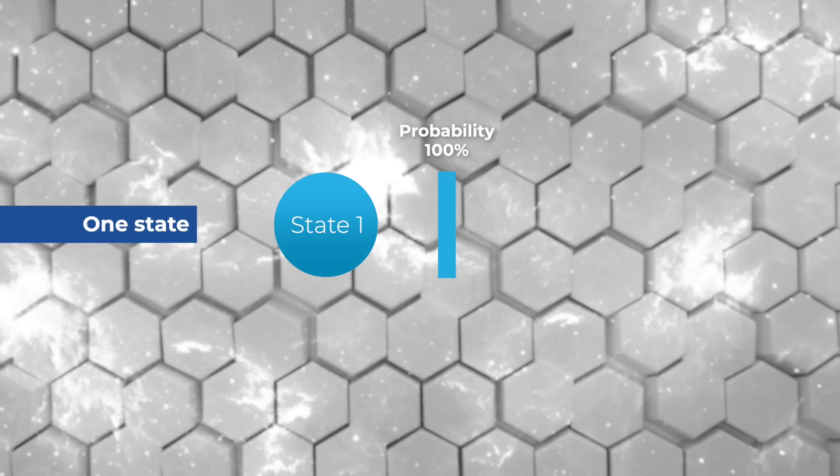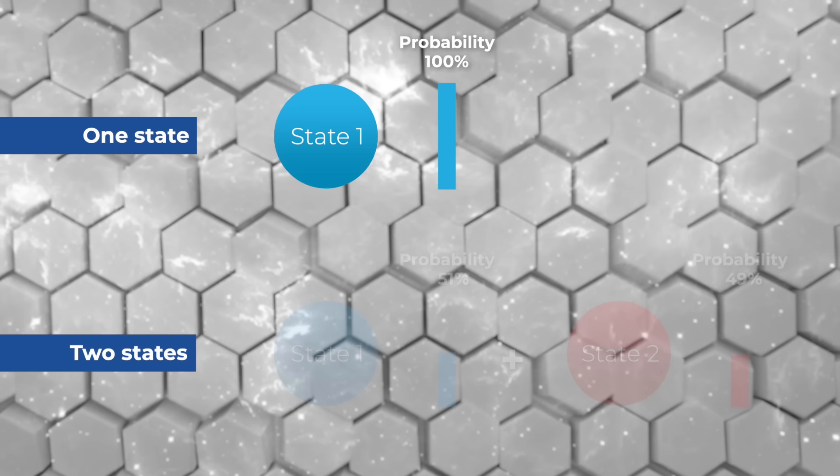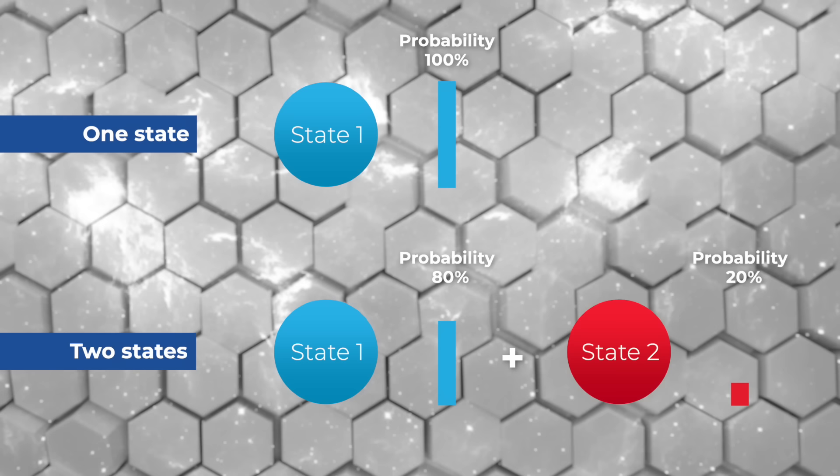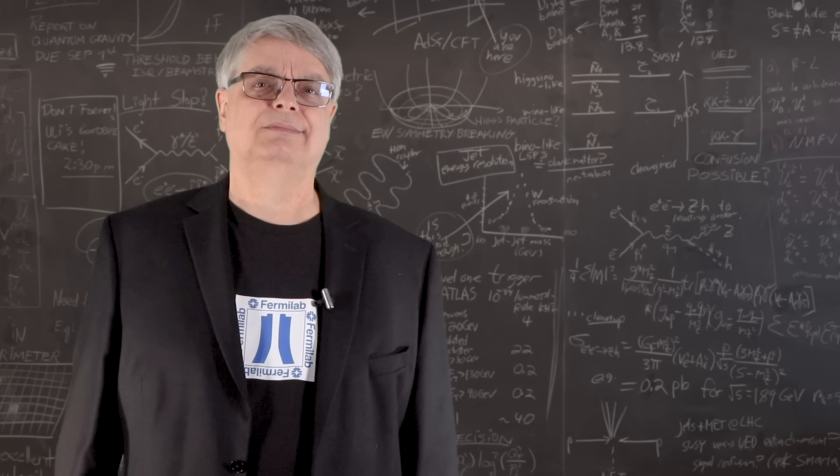But if you have an atom in more than one state, then the wave nature matters. First, because now the probabilities are shared between two states, and second, because the different phases of the different states change the probability of detecting either state.